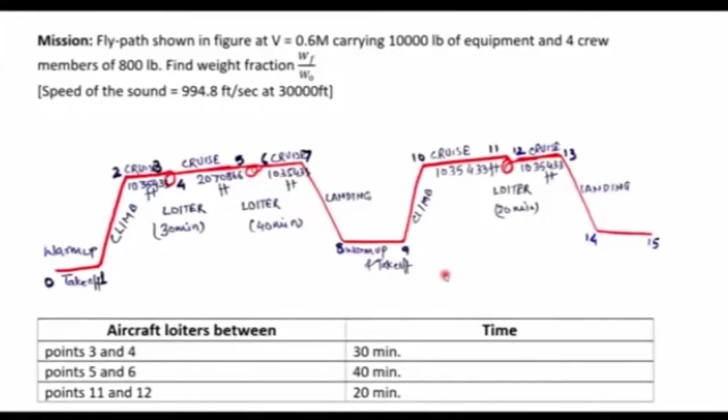In this problem, we have a civilian aircraft with velocity 0.6 Mach carrying total equipment and payload 10,000 pounds and four crew members of 800 pounds. We have to calculate weight fraction Wf by W naught. The speed of sound is 994.8 feet per second.